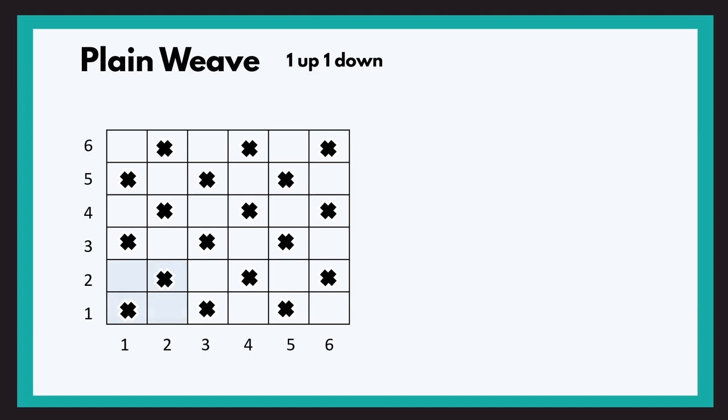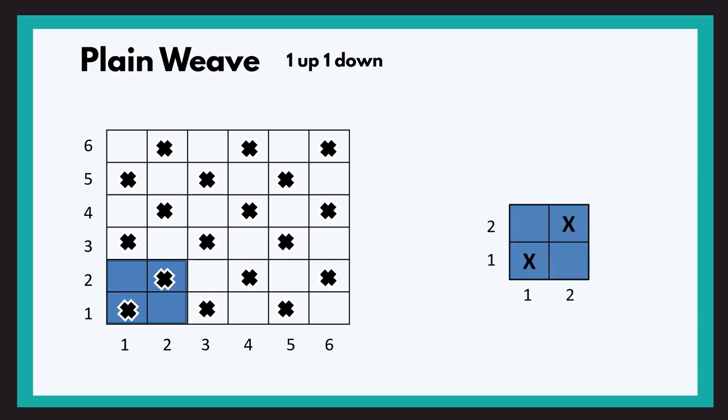Now let us understand the term repeat size. Basically it is the motif or the smallest unit in which the design can be represented. For this design, if you focus on the highlighted part you will see that the same highlighted section gets repeated all over the design. Therefore this is the repeat size of the design, and the plain weave can be represented with this motif.